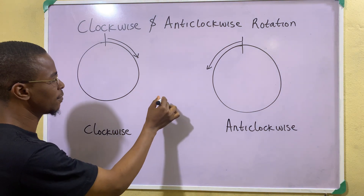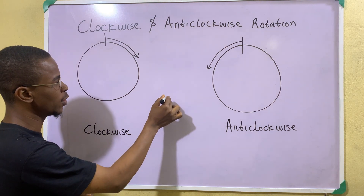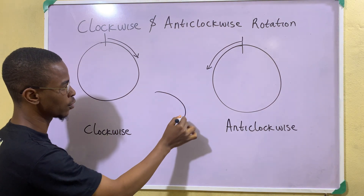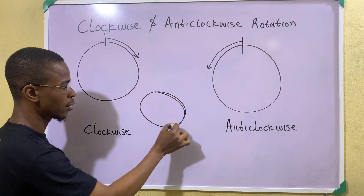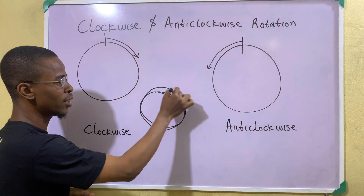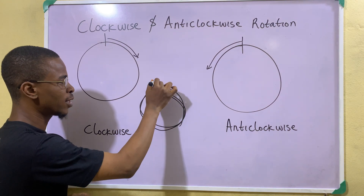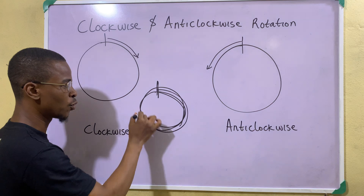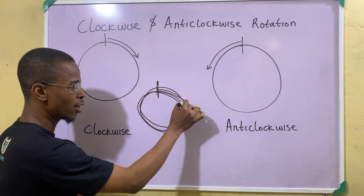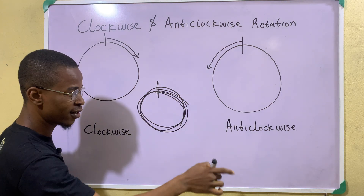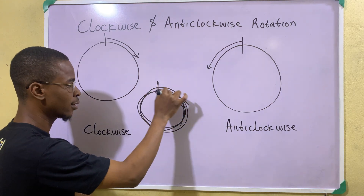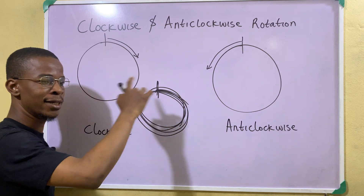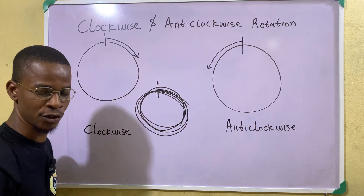So if you have a circle where you go in this direction, you keep going like this. Take note of the note. From here, you pass the note towards the right. This is a clockwise direction.